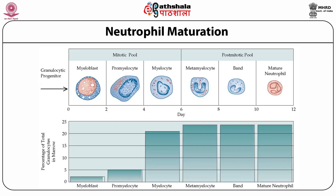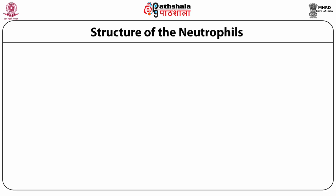After about 12 days, approximately 10 percent of the mature neutrophils are released into the peripheral blood where they have a half-life of approximately 6 to 10 hours. Eventually, the neutrophils migrate into the tissues by diapedesis. The percentage of neutrophils at each stage of development ranges from about 2 percent at the myeloblast stage to almost 25 percent at the mature neutrophil stage.